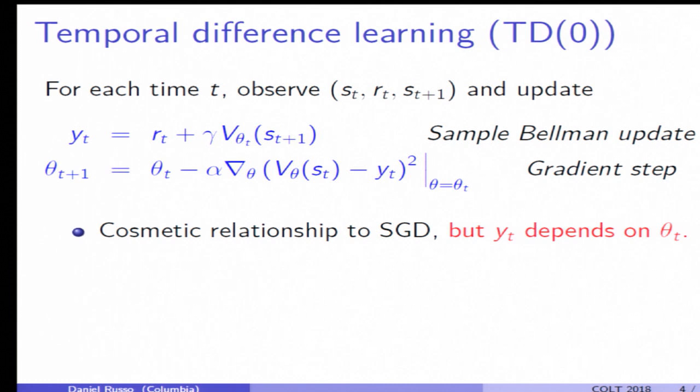And so what I do is I just try to update my prediction at the state s_t and bring that closer to y_t. So I take a gradient step of a loss that is the square distance between my prediction at s_t and my updated prediction.